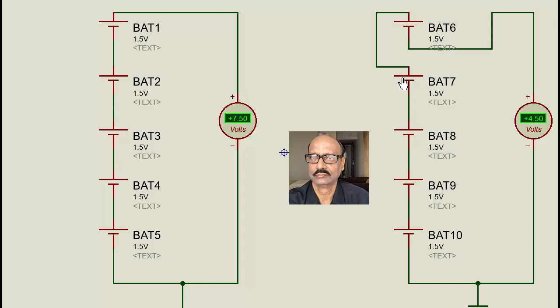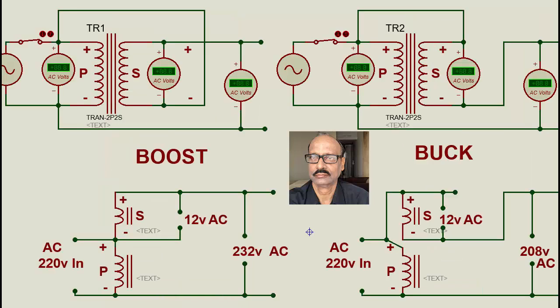Now let us come back to the AC position. Here we have a transformer with primary and secondary. When the primary is given certain voltage, we find it is given 220 volts and it delivers 12 volts.